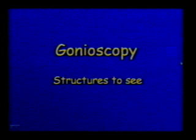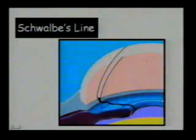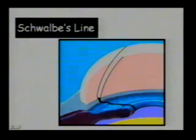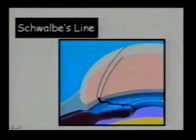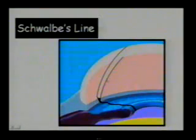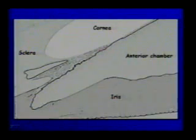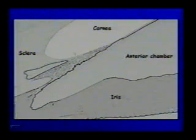How to identify the structures — first, how to identify Schwalbe's line. In this slit lamp section, you will see light on the external surface of the cornea and the internal surface. The cornea is transparent, and as we go posterior toward the sclera, we see the opacity. The two light beams — on the anterior external surface and on the internal surface — meet at Schwalbe's line. The sclera is opaque, so the external and internal lights will join there.